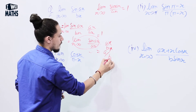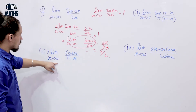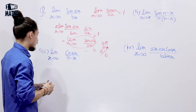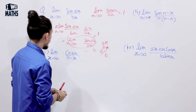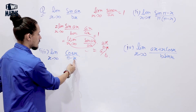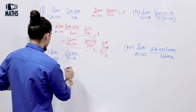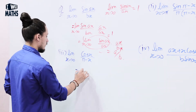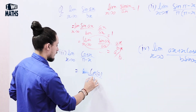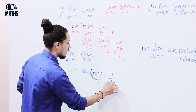The final answer is a/b. Next: lim (x → 0) of cos(x) / (π - x). We know cos(0) = 1, and the denominator becomes π - 0 = π. This doesn't give 0/0 form, so cos(0) / (π - 0) = 1/π is the answer.